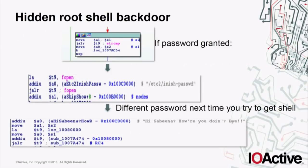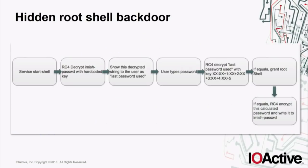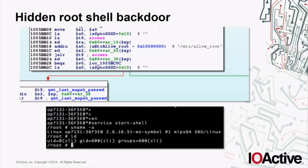In the code, after the password is granted, it opens the imiss_password file again and RC4 encrypts — with the same static key — the password that the user typed when access was granted. This means the next time you execute the service star cell command, the password will be different. That's why I call this a 'dynamic password' — you have to do the whole calculation process again each time. Also in the code, we can see that since we got access to the root shell, creating a file 'allow_root' in /etc makes it persistent, so it won't ask for any password again.